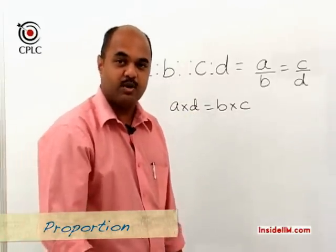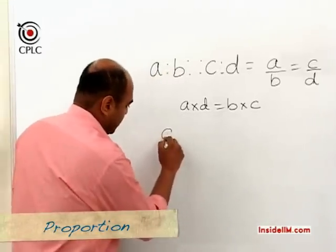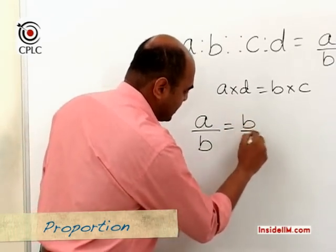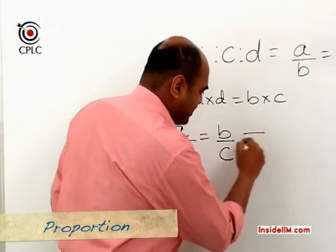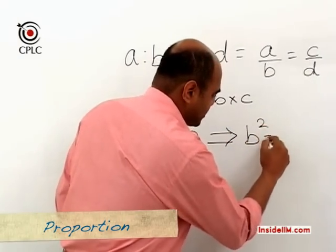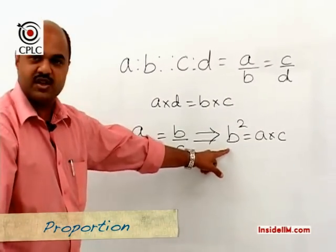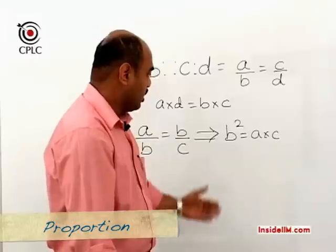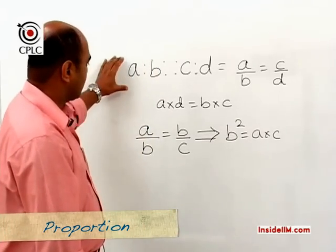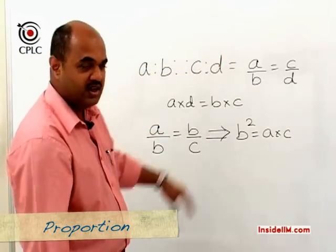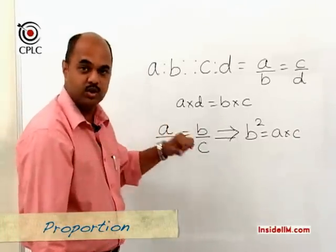A variation of proportion is continued proportion. If A, B, C are in continued proportion, it means A/B = B/C — since B gets continued, it is referred to as continued proportion. Cross-multiplying gives B² = AC. In continued proportion, B is referred to as the mean proportional or the geometric mean of A and C.